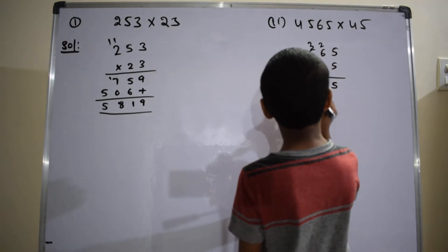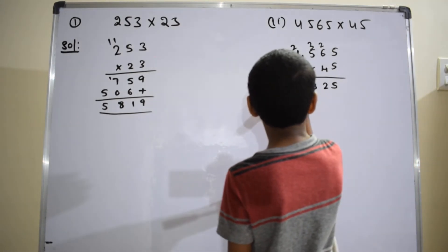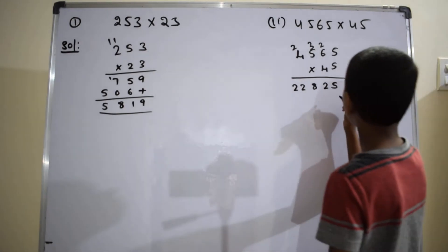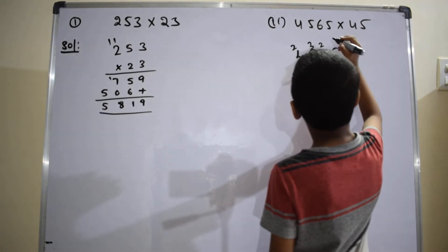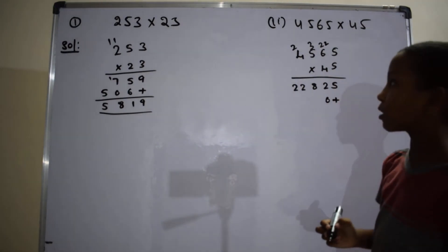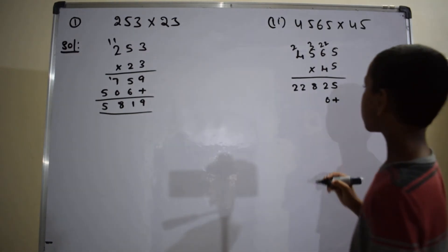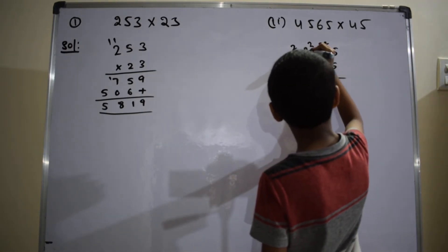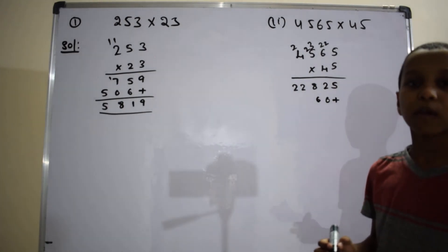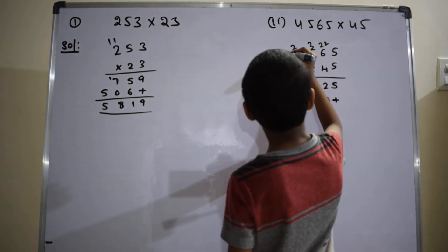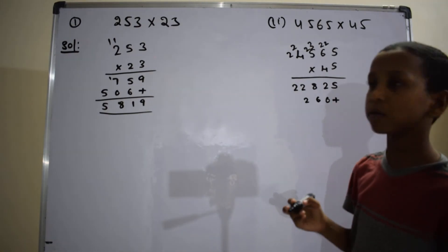Right here 8, and 2 is carried to the 4. 5 into 4 equals 20. Right here 2 is carried to the 5. 4 into 5 equals 24. 24 plus 2 equals 26, right here 6. 2 is carried to the 5. 4 into 5 equals 20. 20 plus 2 equals 22, right here 2. 2 is carried to the 4. 4 into 4 equals 16. 16 plus 2 equals 18.